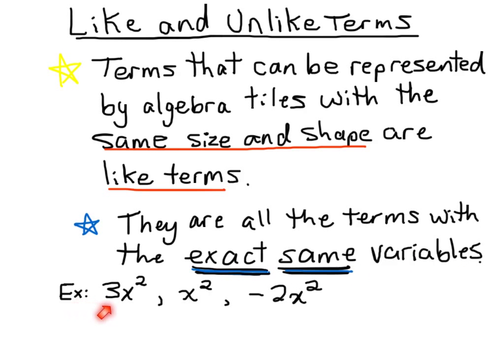In this example here, we've got 3x squared, we have x squared, and we have negative 2x squared.